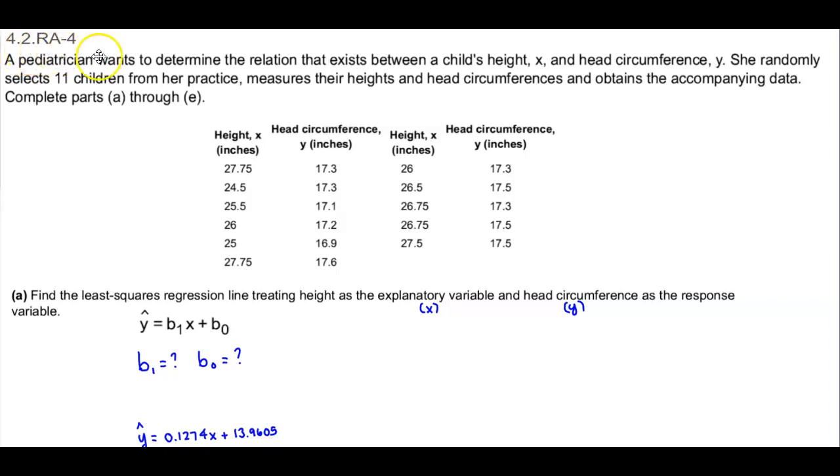Section 4.2 RA4. A pediatrician wants to determine the relation that exists between a child's height X and head circumference Y. She randomly selects 11 children from her practice, measures their heights and head circumferences, and obtains the accompanying data. We're going to complete parts A through E.